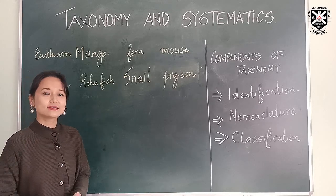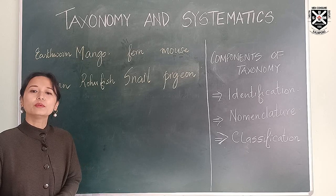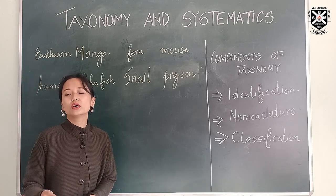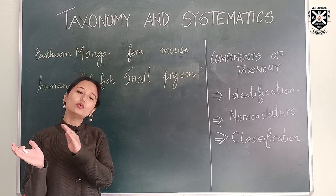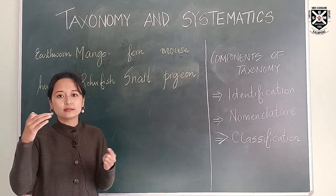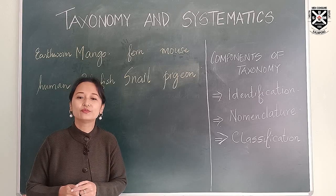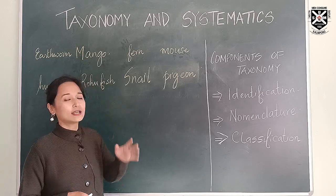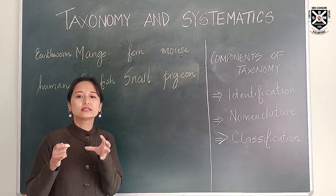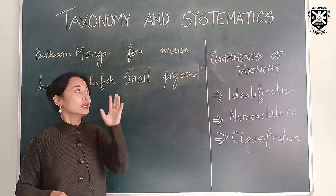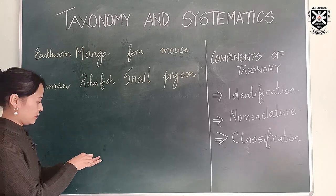Hello students, welcome to your biology class. Today we're going to start with Chapter 2, that is taxonomy and systematics. From junior classes, you may have studied about branches of biology such as botany, which deals with the study of plants, and zoology, which deals with the study of animals. There is one more branch of biology that deals with organizing the vast variety of organisms into different groups based on their similarities, and that branch is known as taxonomy.